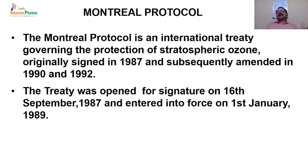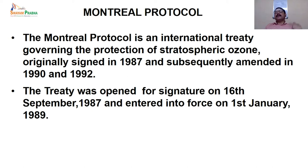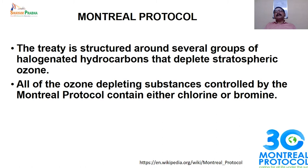The important aspect to note is international treaties or protocols. This treaty or protocol is an international signature signed by very many countries. First is the Montreal Protocol, which was signed in the year 1987. India also signed it and it was subsequently amended in 1992. The very purpose of the treaty is to stop ozone depleting substances. This treaty was signed on 16th September 1987 and came into action in January 1989. It is structured around several groups of halogenated compounds, particularly fluorohydrocarbons and halogenated hydrocarbons.